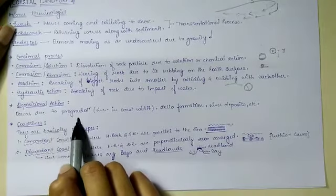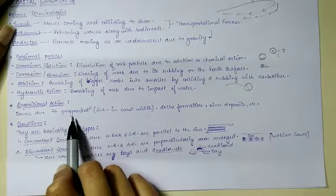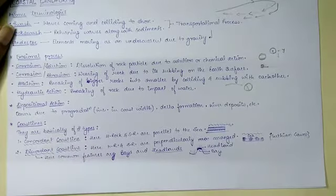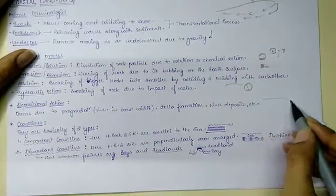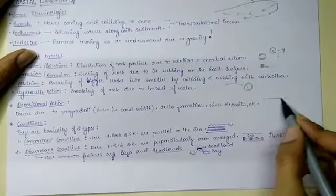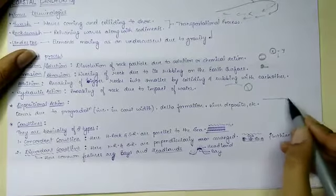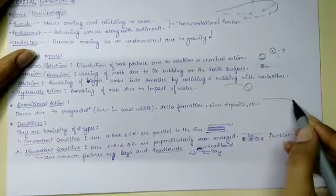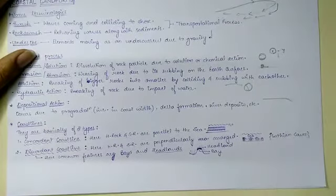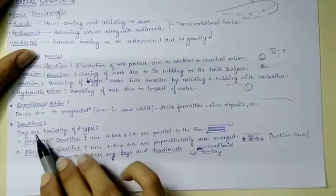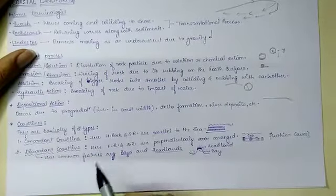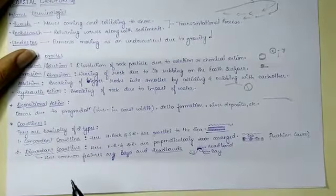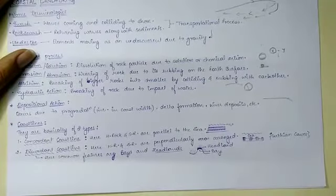Next is the depositional process. It occurs due to progradation — progradation is an increase in the coastal width. This is the main coastline initially and there is an increase in its width. It occurs due to progradation, delta formation, or by river deposits.